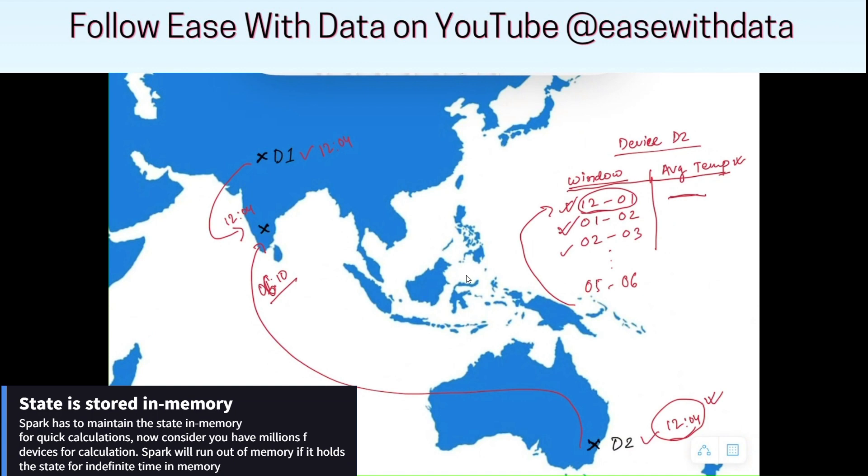But this is only 6 hours. Consider a case where an event arrives late by 2 days. Is it feasible for Spark to hold this much calculation in its memory? No. It will run out of memory if it holds so much state in its memory. And this is where stateful processing comes into picture.